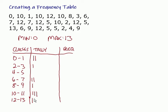Then we go 7, 12, 7, and then 12, and then 5, 10, 2, 12, and 5. Okay, and then finally our bottom row there, 13, 6, 9, 12, 5, 5, 2, 4, and 9.